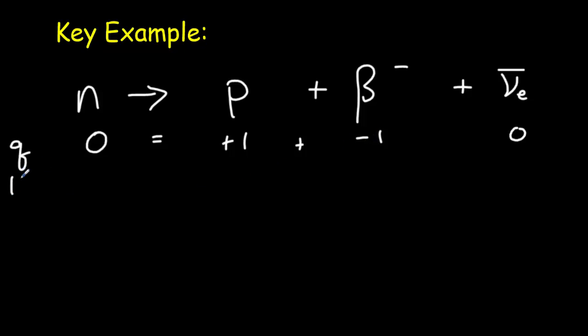Let's look at baryon number. Neutron, that is a baryon. Proton, that is a baryon. Electron, not a baryon. Neutrino, not a baryon. So we get one equals one. That's satisfied as well.